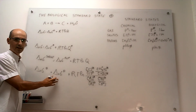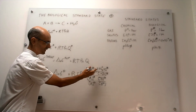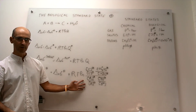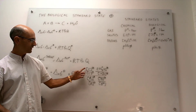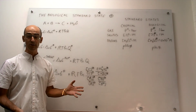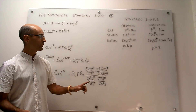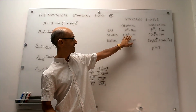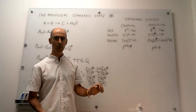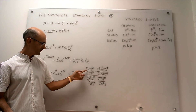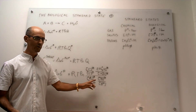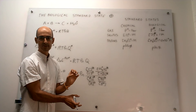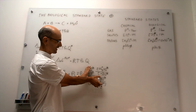This value can be calculated from thermodynamic tables. Notice that species A, B, and C are solutes that are not protons. The concentrations at the chemical standard state and biological standard state for solutes that are not protons are all one molar. So these ratios all equal one, and there is no difference between the chemical and biological standard state for those species — all of this cancels out.